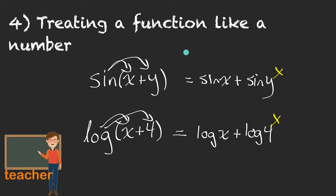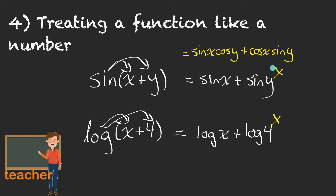What we have with both of these isn't a product of things — it's not sine times (x plus y) and log times (x plus 4). It's sine of (x plus y) and log of (x plus 4). You can't distribute a function into its own argument. Sine of (x plus y) is actually fairly complicated — there's an identity for that. If you wanted to rewrite sine of the angle (x plus y), it equals sine x cos y plus cos x sine y. And log of (x plus 4)? There's nothing we could do to simplify that. You can't expand a log into its own argument.